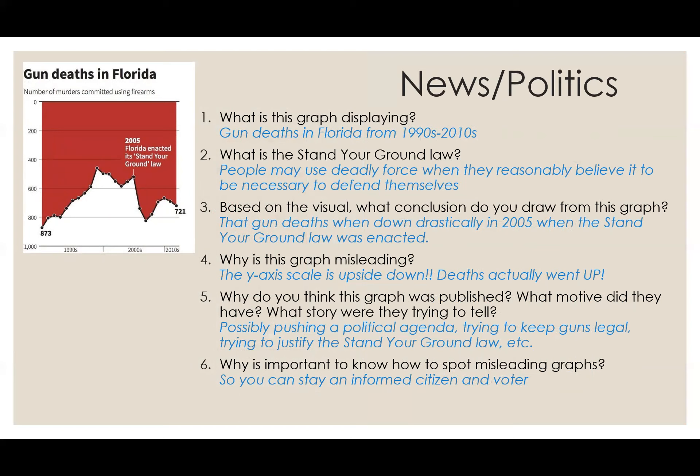Why do you think this graph was published? What motive did they have? I would say whoever made this was possibly pushing a political agenda — trying to keep guns legal and justify the stand your ground law. So they manipulated the data and showed it in a misleading way to get their point of view across. Why is it important to know how to spot misleading graphs? It's super important so you can stay an informed citizen and an informed voter.